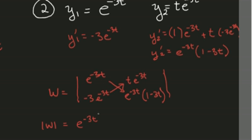When you multiply two like bases, you add the exponents, and then you have that 1 minus 3t, and then minus negative 3te to the negative 3t plus negative 3t again.